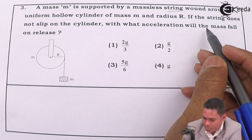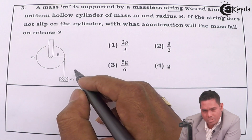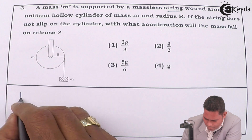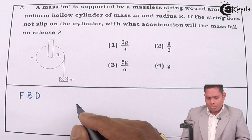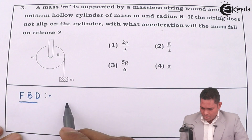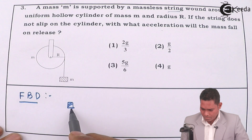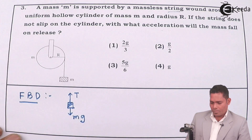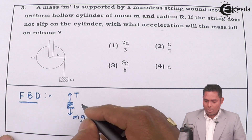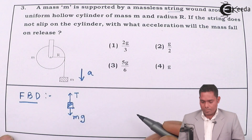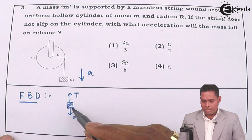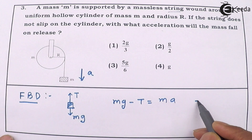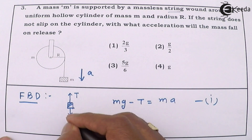So with what acceleration will the mass fall on release? This is basically a question on rotational motion. Let me write the free body diagram of the block. The block has mass M, weight Mg acts downward, and there is a tension T in the string acting upward. If this block goes down with acceleration A, then from Newton's law: Mg minus T equals MA. This is equation number 1.